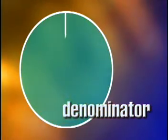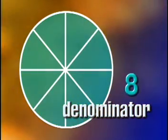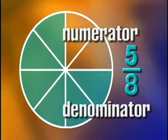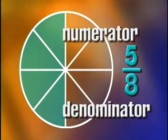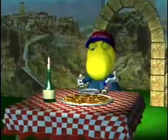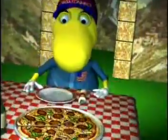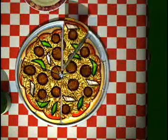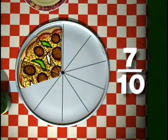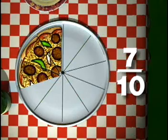The denominator is the number of equal parts you divide the whole into. The numerator stands for the number of pieces you are considering out of the whole. For example, Norbert is going to eat a pizza. The pizza is cut into ten equal pieces. He eats seven pieces out of the ten, so we can say he eats seven tenths of the pizza.